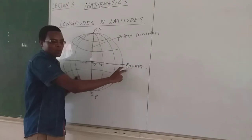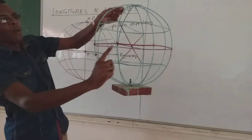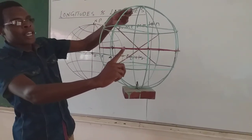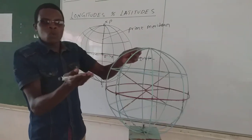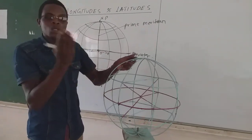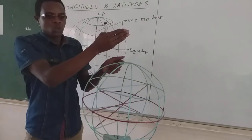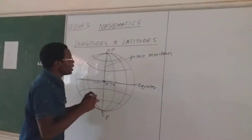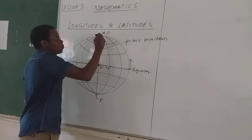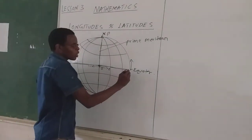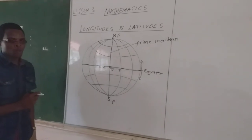Now I talked about the equator. In our sketch here, this is the equator — the one I have decorated with the red. The equator divides the globe of the Earth into two equal halves. The moment you move from the equator towards the north, up to where we have the North Pole; and you can also move towards the south, up to where we have the South Pole.